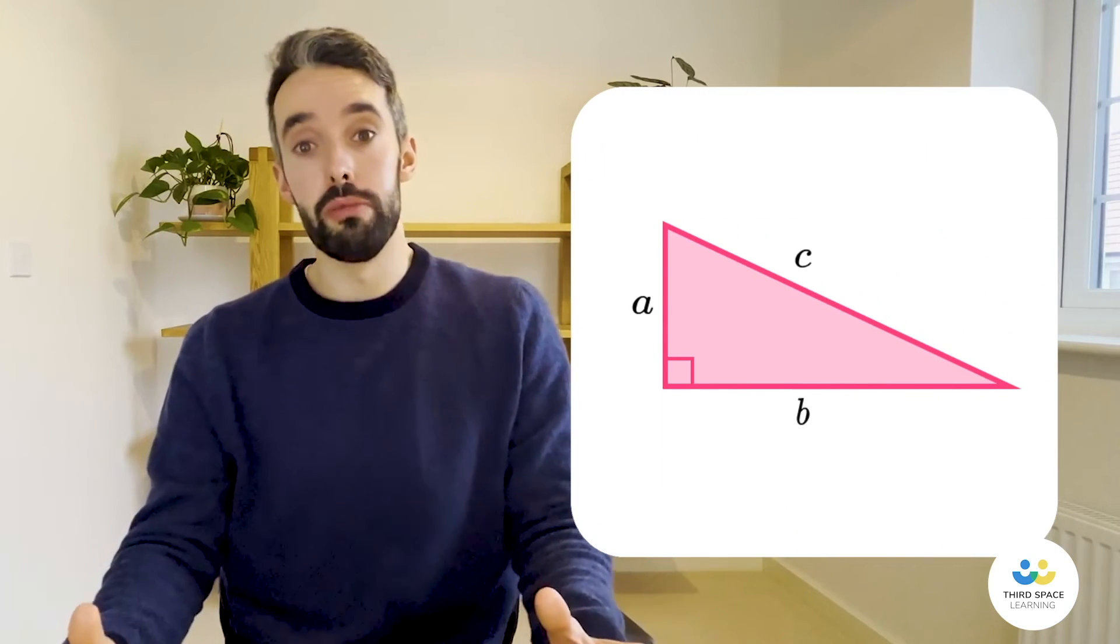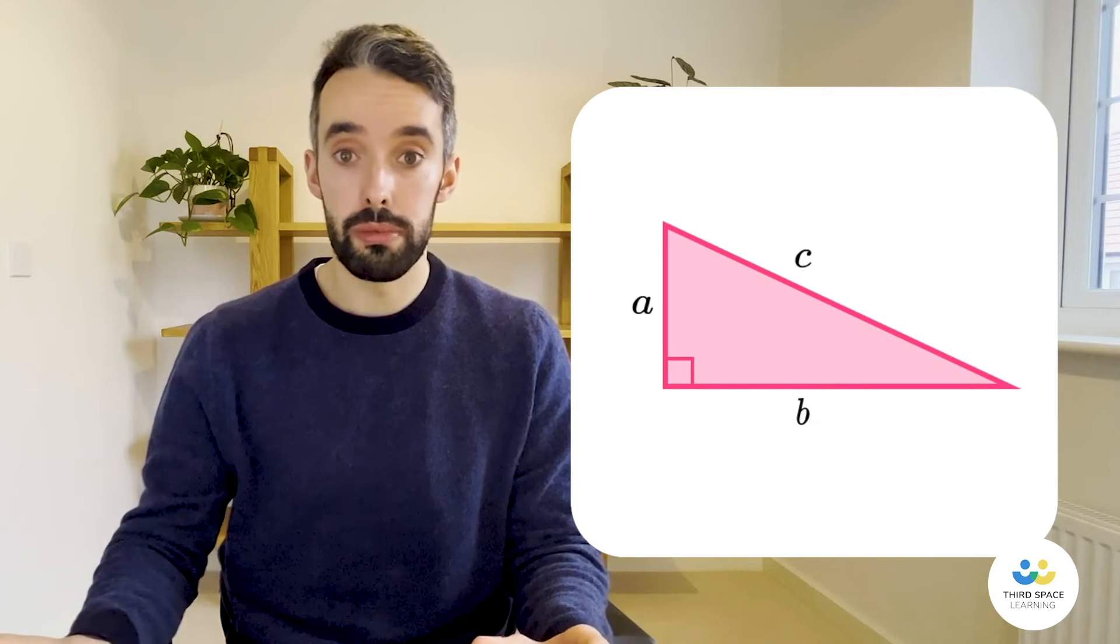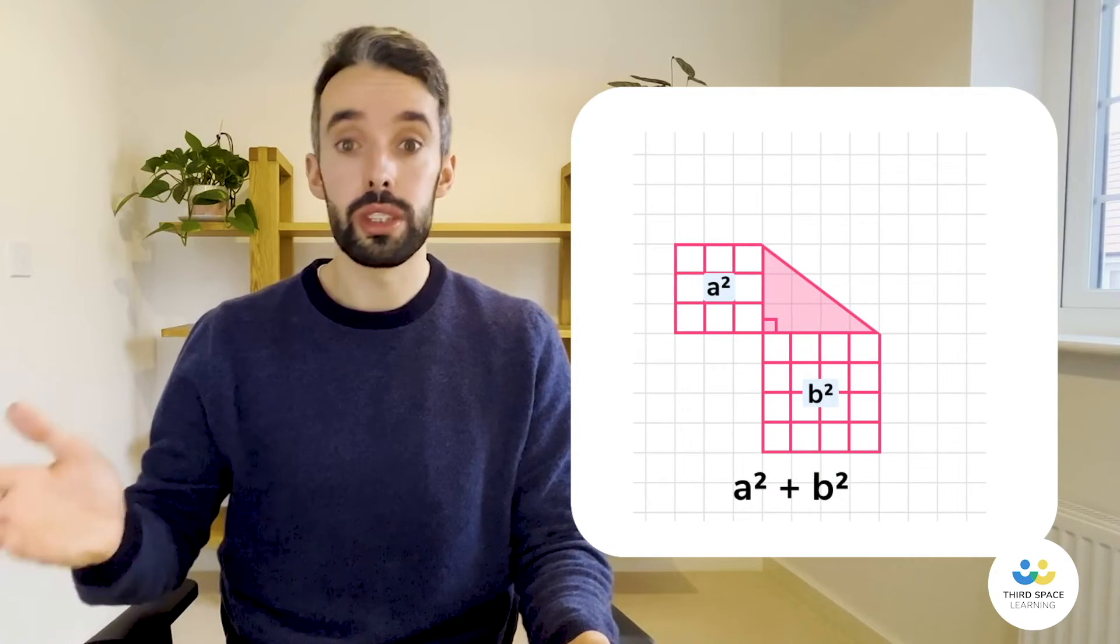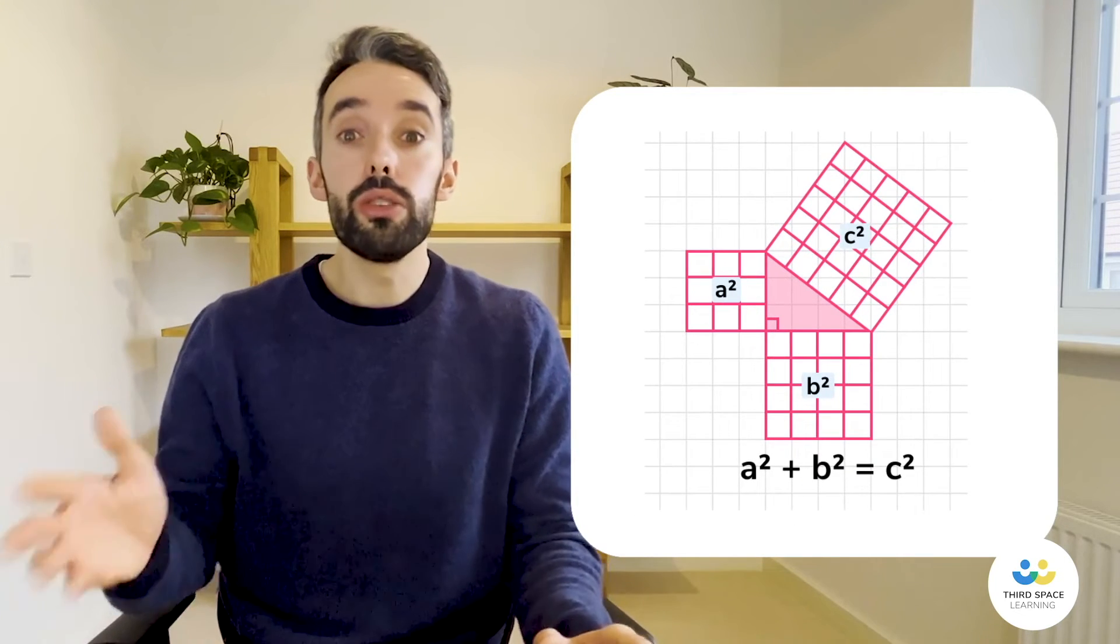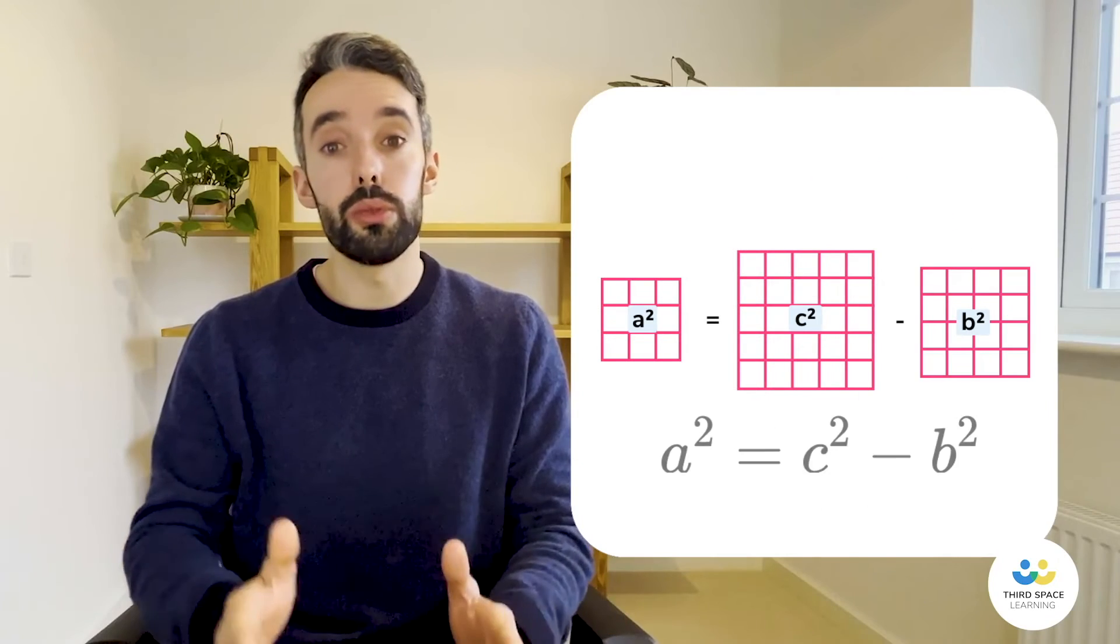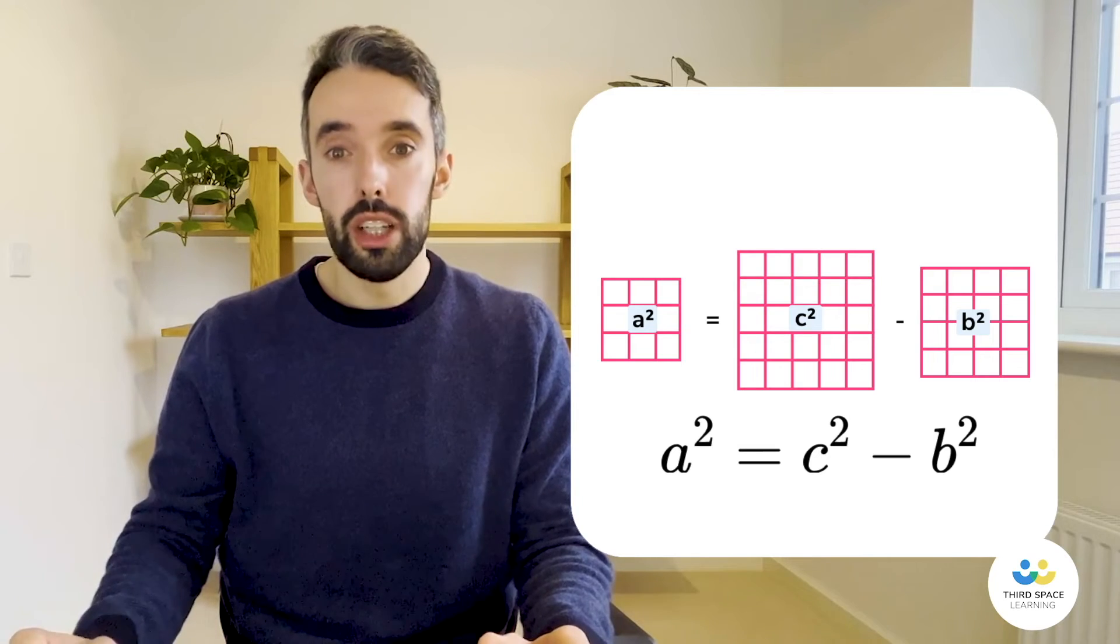So we remember that Pythagoras' Theorem is used to work out the lengths of right angle triangles: a squared plus b squared equals c squared. Now in order to work out one of those shorter sides, all we have to do is a squared equals c squared minus b squared. So let's have a look at that in a little more detail.